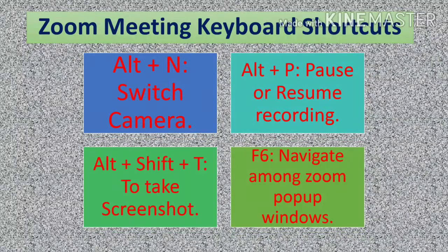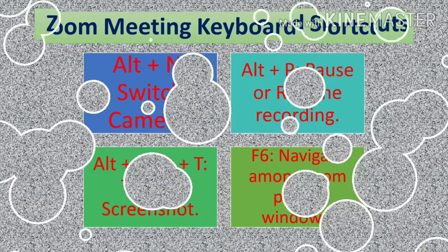Alt plus N is used to switch camera. Alt plus P is used to pause or resume recording. Alt plus Shift plus T is used to take a screenshot. F6 is used to navigate among Zoom pop-up windows.